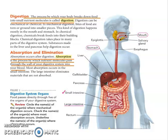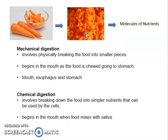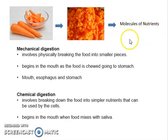Digestion is the process by which your body breaks down food into smaller pieces until it becomes nutrient molecules. I have here some pictures. How does it work? Digestion is simply the process of breaking food from a big portion, going to smaller, going to the smallest part, which is the nutrient molecules.